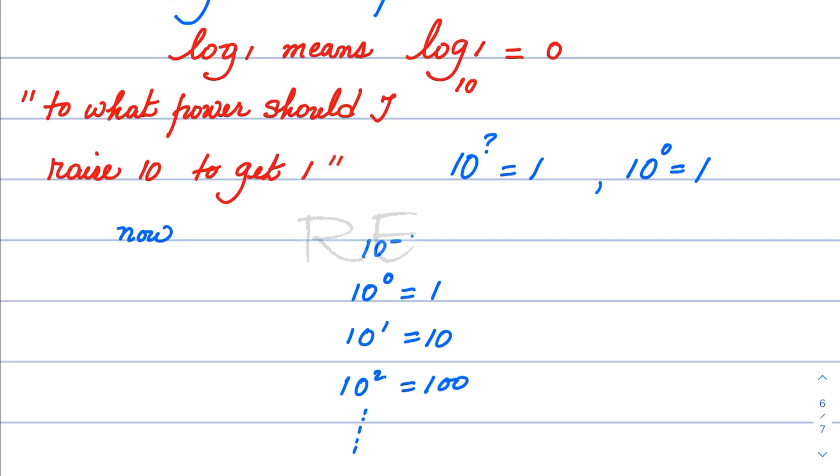10 to the negative 1 is 1 over 10, 0.1. 10 to the negative 2 is 1 over 100, 0.01. So, 10 to a negative real number will be a tiny number between 0 and 1.